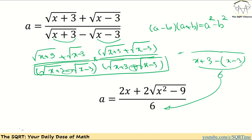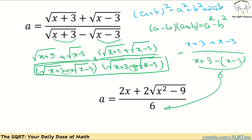Now let's focus on the top. For the numerator I have (√(x+3) + √(x-3)) multiplied by the same term, so I use the identity (a + b)² = a² + b² + 2ab. This gives us the first term squared, which is (x+3), plus the second term squared, which is (x-3), plus 2 times the first term times the second term.